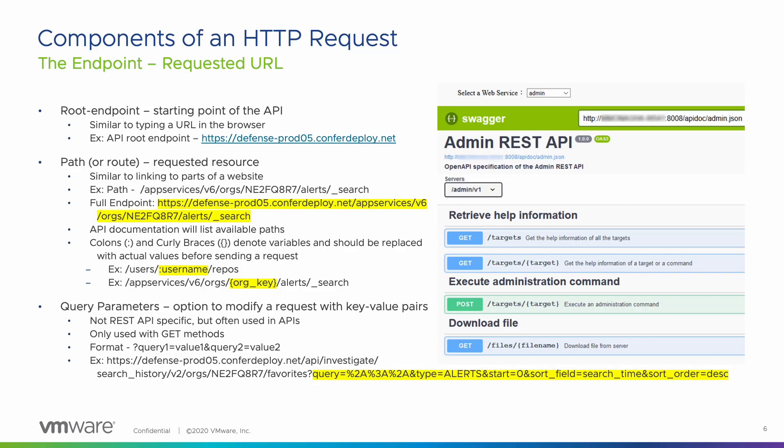To understand what paths are available to you, you need to look through the API documentation. The photo on the right shows some sample paths for an admin REST API. Users can retrieve help information, execute administration commands, and download files by accessing different paths. Colons and curly braces in a path denote variables. You should replace these values with actual values when you send your request. For example, you should replace colon username with the actual username of the user you're searching for. If searching for alerts using the Carbon Black Cloud Alerts API, you would replace org key with the key of the organization for which you want to find alerts.